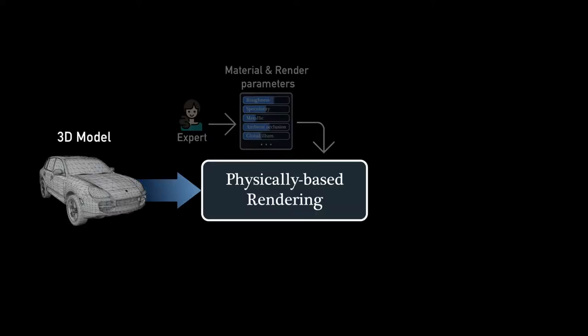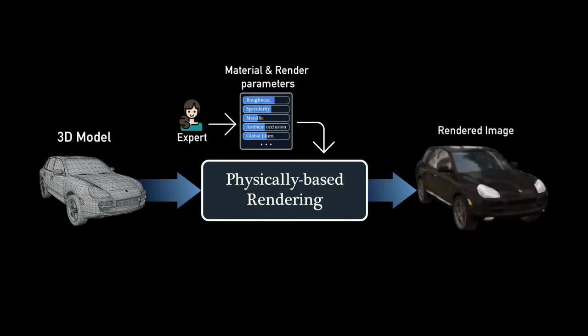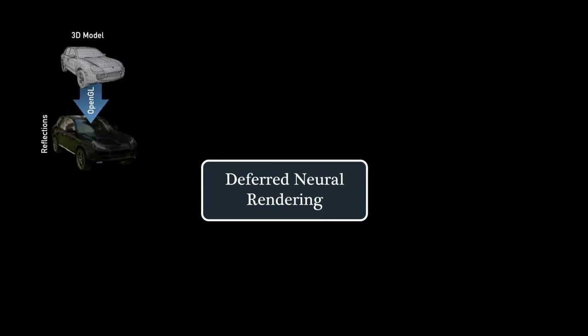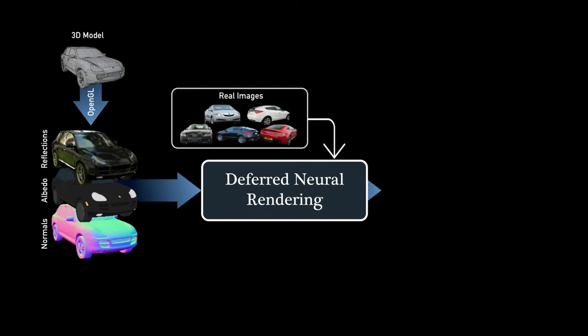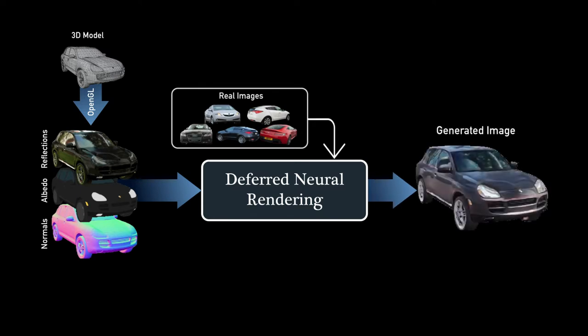Physically based rendering can produce high quality images but requires expert tuning of material properties and rendering parameters. Deferred neural rendering instead learns the deferred rendering process directly from real images without needing any expert knowledge.